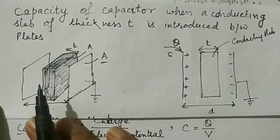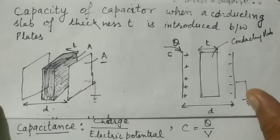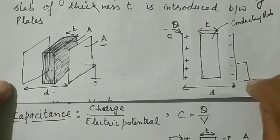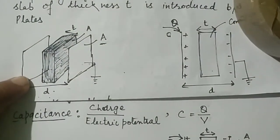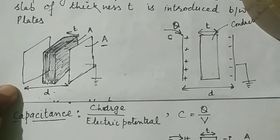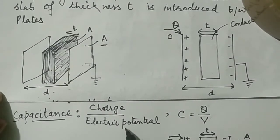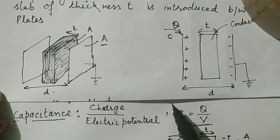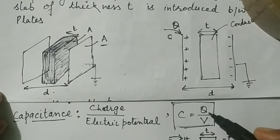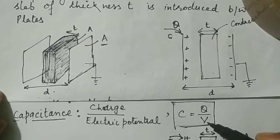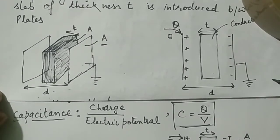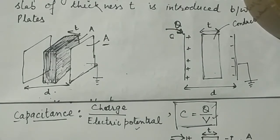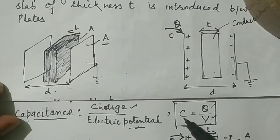Now we want to find out the capacitance of this arrangement. We go to the definition of capacitance: capacitance is defined as the charge per unit potential developed, that is C = Q divided by V.